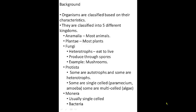A little bit of background: organisms are classified based on their characteristics and put into different groupings. The top level grouping is called a domain, then underneath that an organism is classified into a kingdom, then into a phylum, a class, and a species. Cambridge doesn't go too deep into phyla, classes, or species, but they do want you to know the five different kingdoms. There's the Animalia kingdom for animals, and the Plantae kingdom for plants.